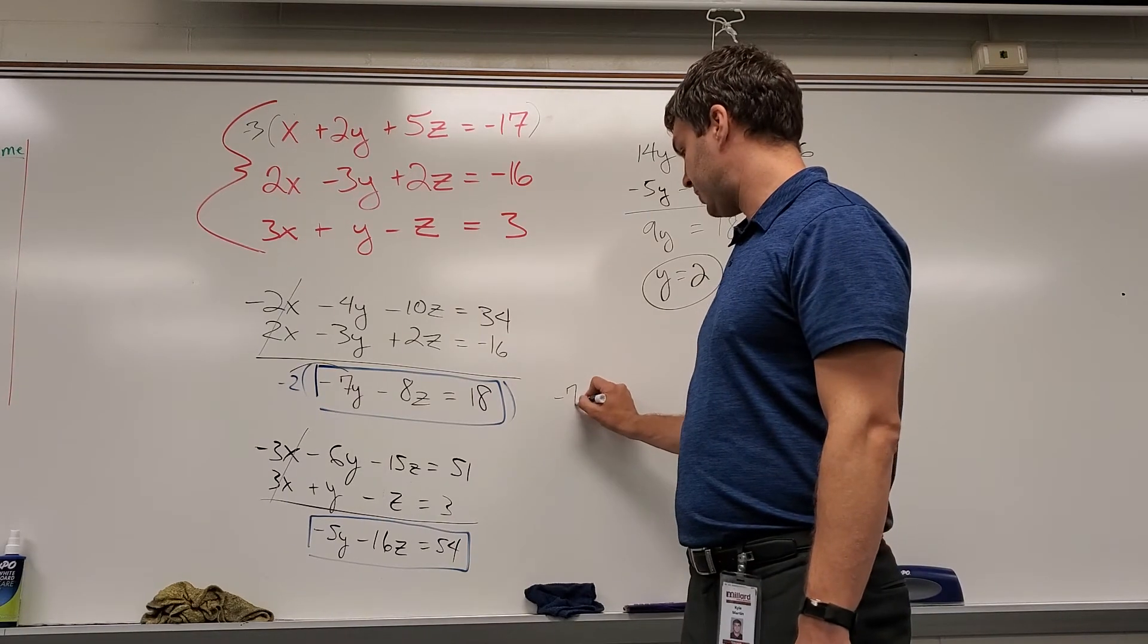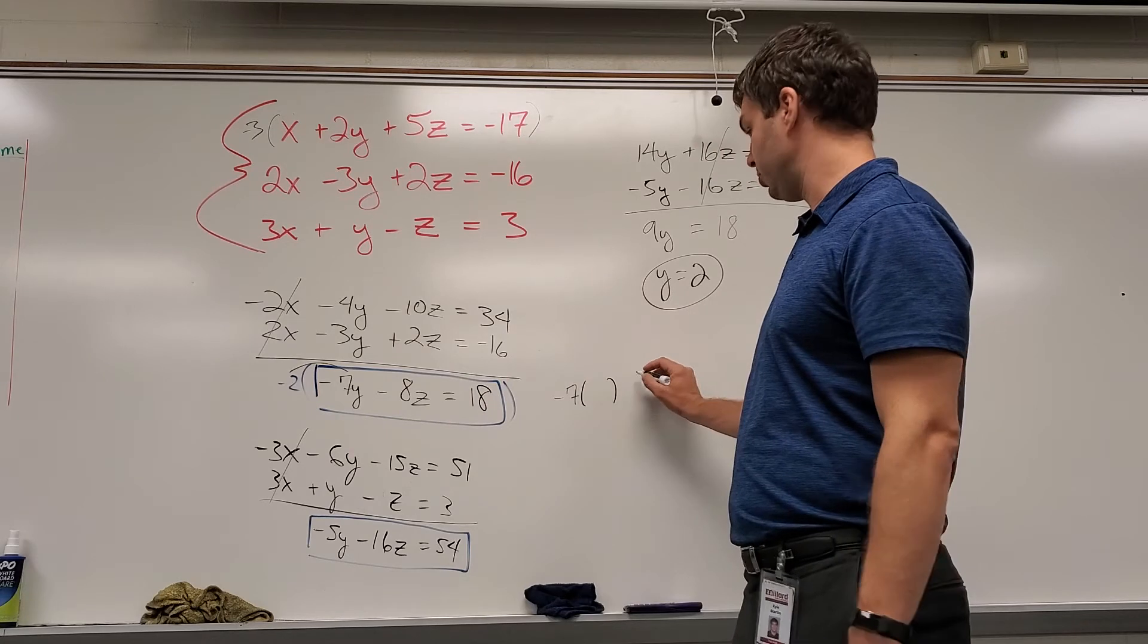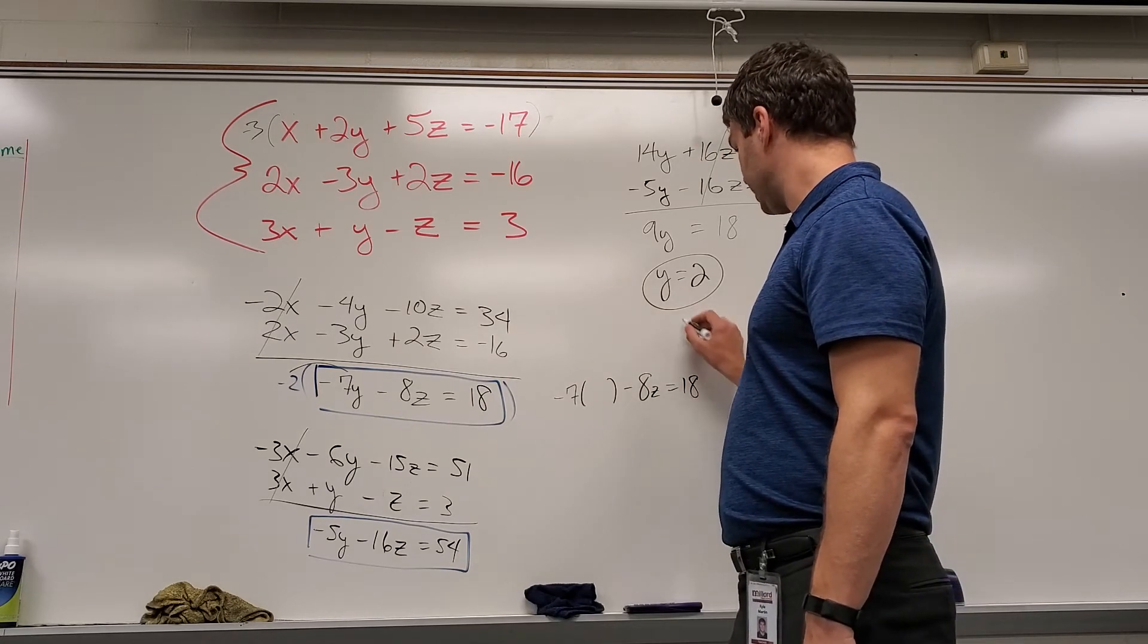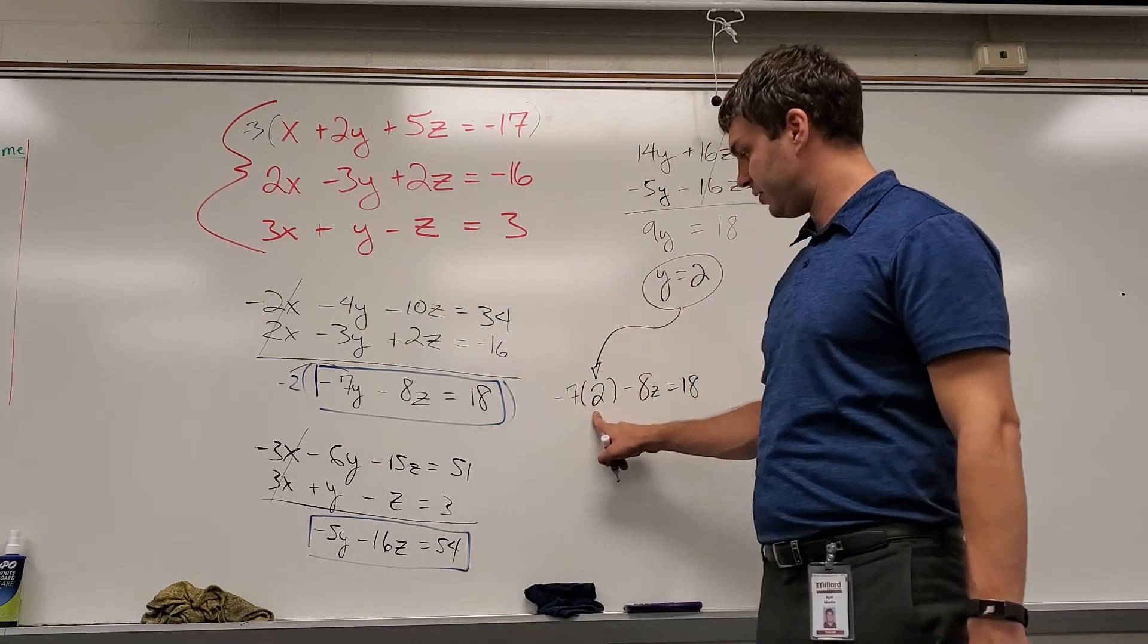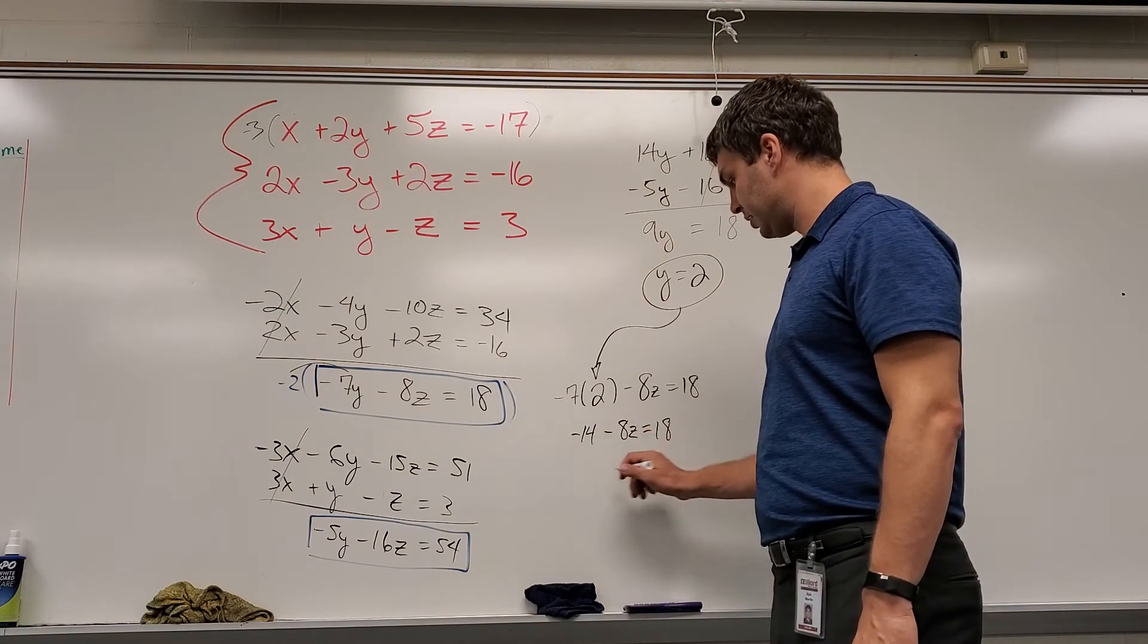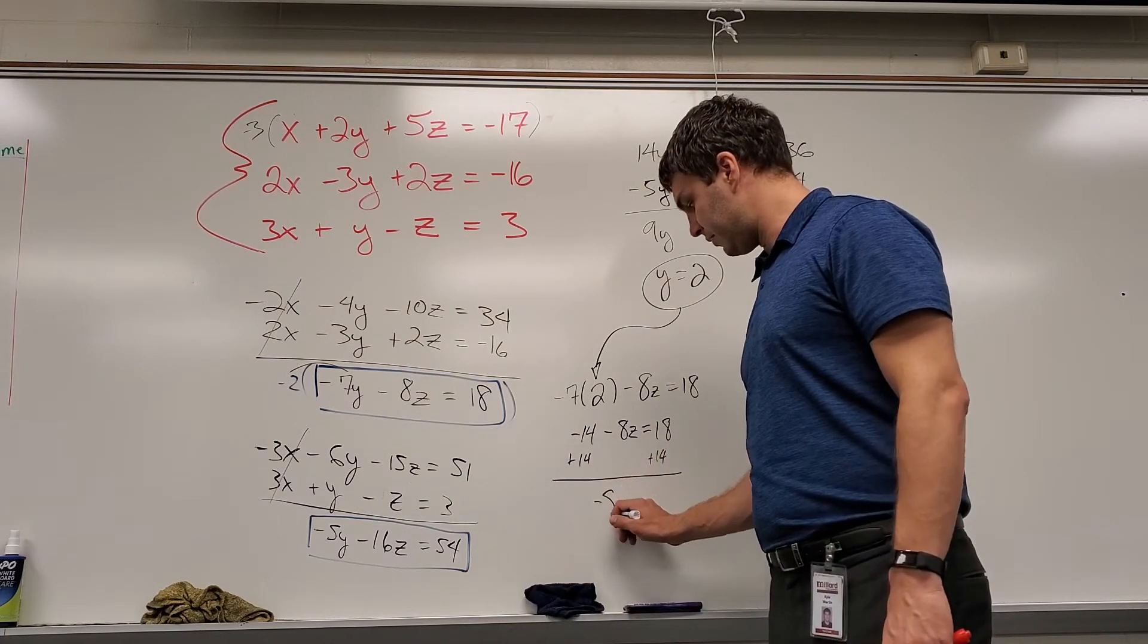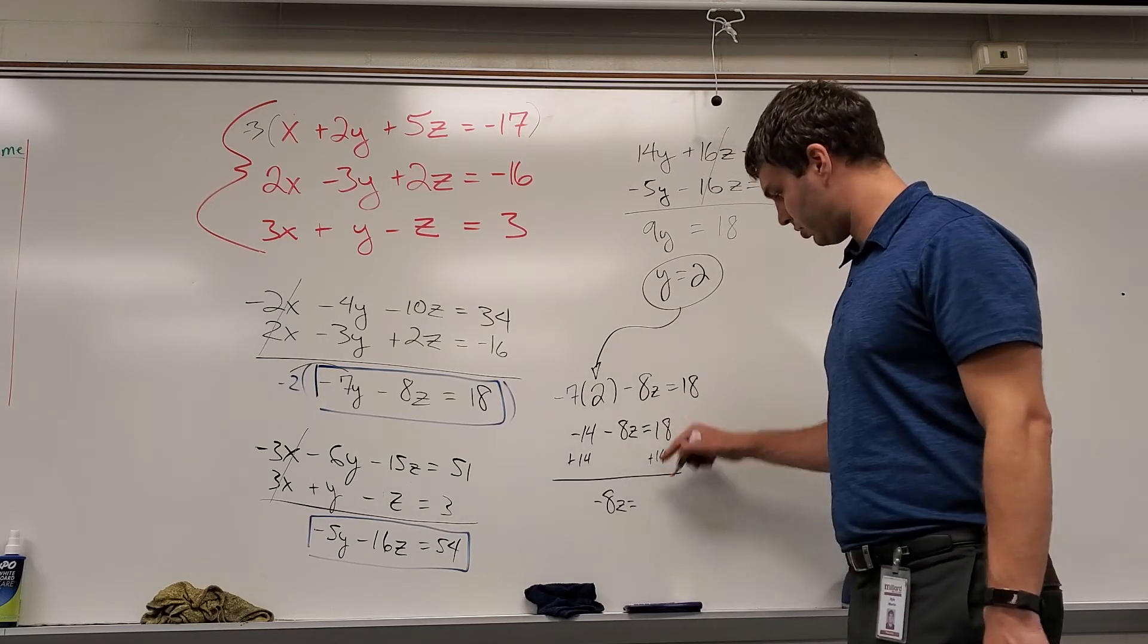Let's see, I think maybe this one might be a bit easier. So we're going to have negative 7, instead of y, I'm going to leave an open space, we'll fill that up with a 2, and minus 8z equals 18. So this is going in right there. Negative 7 times 2 is negative 14. Minus 8z equals 18. Add 14 to both sides.